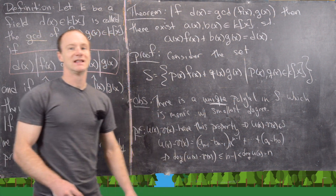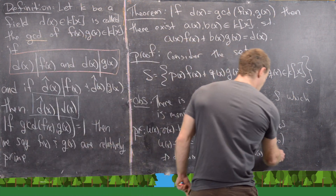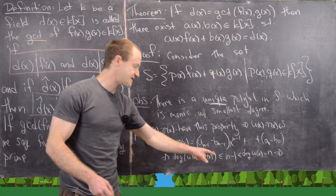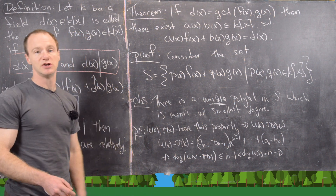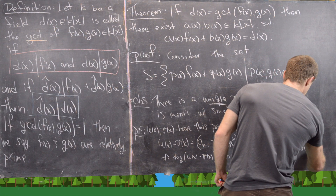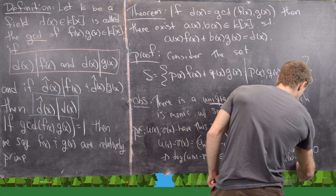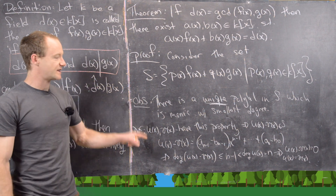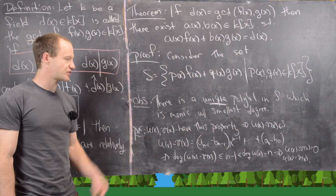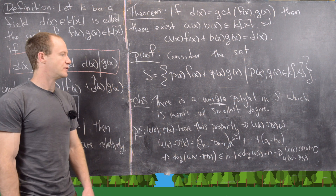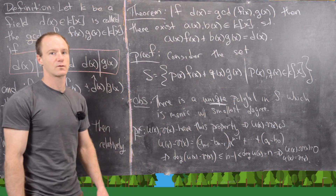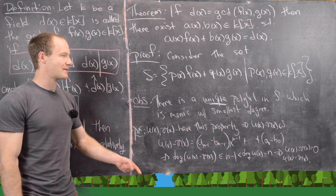This degree is strictly less than the degree of U(X) = degree of V(X) = N, which was supposed to be the minimal degree of anything inside S. We've found something of strictly smaller degree inside S. So either this is a contradiction, or this is actually the zero polynomial — and since no nonzero polynomial of smaller degree can exist in S, we conclude U(X) − V(X) = 0, i.e., U(X) = V(X). Thus there is a unique monic polynomial in S with minimal degree.